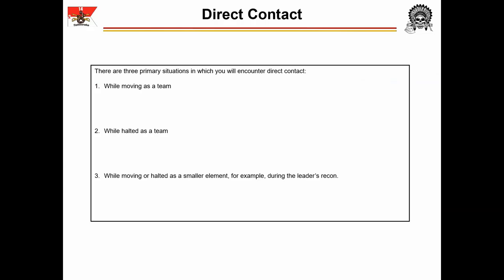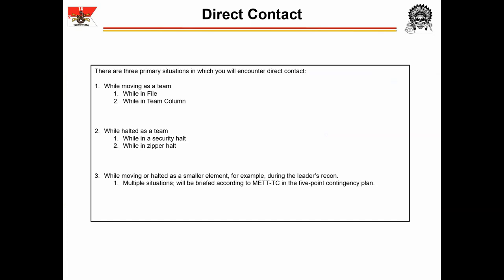There are three primary situations in which direct fire contact can occur: while the team is moving, while the team is halted, and while the team is split with separate moving and stationary elements. In these situations, there are a limited number of formations the team will be utilizing. If moving, the team will be in a file or in team column. If halted, in a deliberate security halt or a zipper halt. If the team is split, the team leader will brief the specific reaction expected during his five-point contingency plan, also called a GATWA. Thus there are a limited number of team dispositions in which we can rehearse a react-to-contact drill.